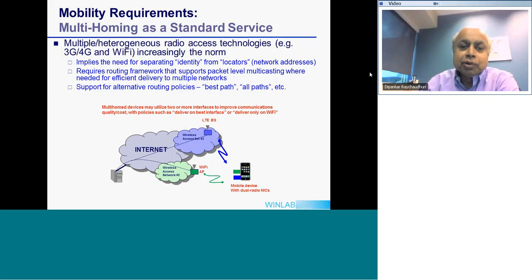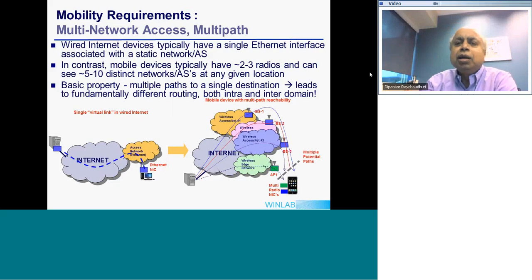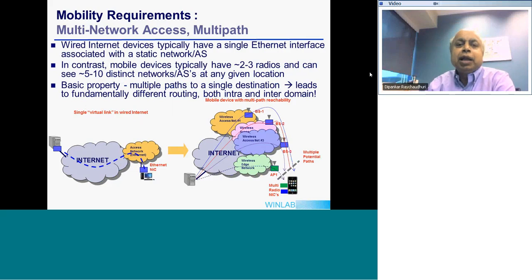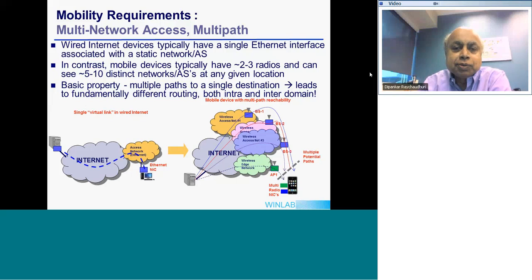Multi-homing is often associated with the notion of a Wi-Fi hotspot, but multi-network access or multipath is where multiple access networks are simultaneously used to support good-quality communication to the mobile device. The internet needs to support this — it's not something that IP can easily do.